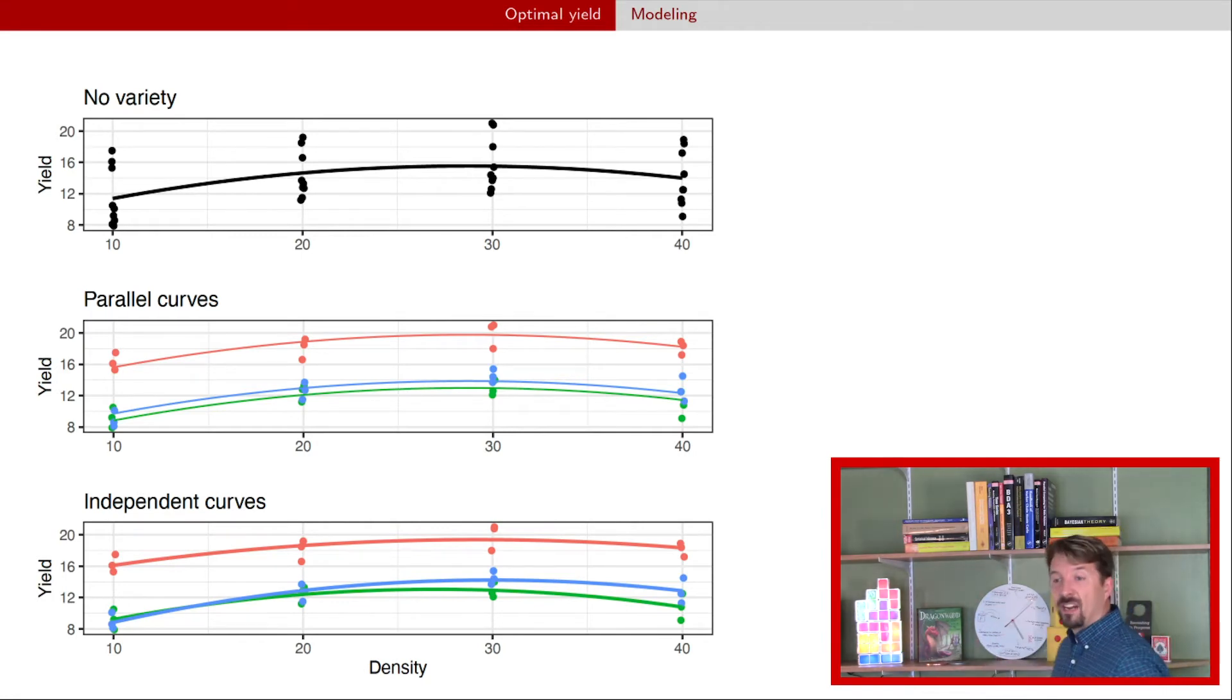The next line down shows the situation when you have parallel curves - that is you include density as well as density squared as well as variety in the model. That seems like a pretty reasonable fit. And then the bottom curve has the last model where you include the interaction between the linear term for density and the quadratic term for density with the variety in both cases, and so you can see now you have different lines for each of the possible varieties.